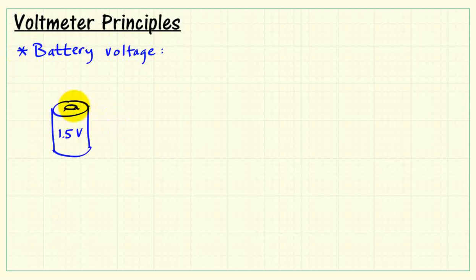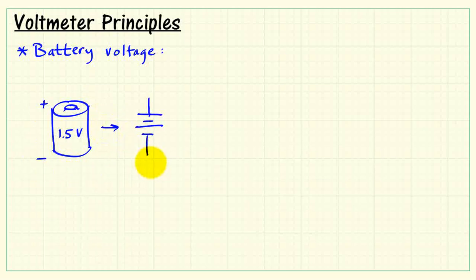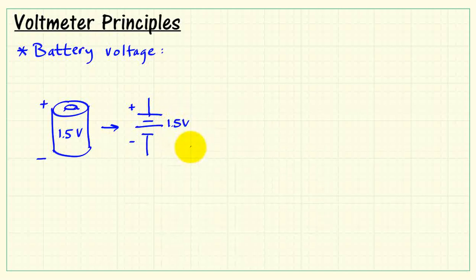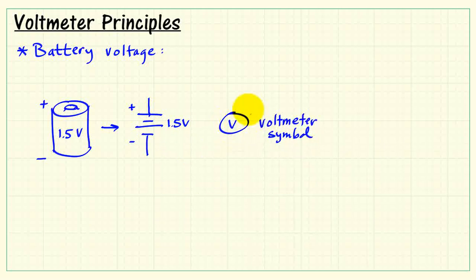Let's consider a 1.5-volt battery. It has a voltage of 1.5 volts. Its electrical symbol looks like this, where the long end is positive and the short end is negative. And the symbol for a voltmeter is a circle with a V on the inside. One end is labeled plus and the other is labeled minus, commonly using the red and black colors shown here.